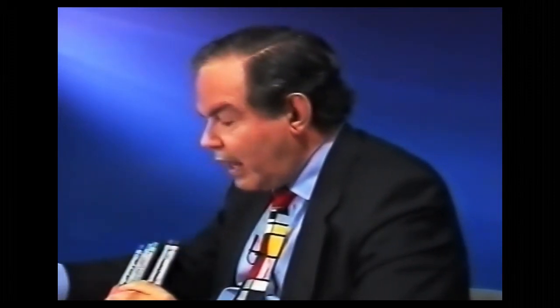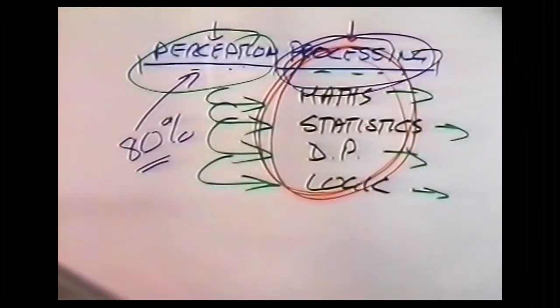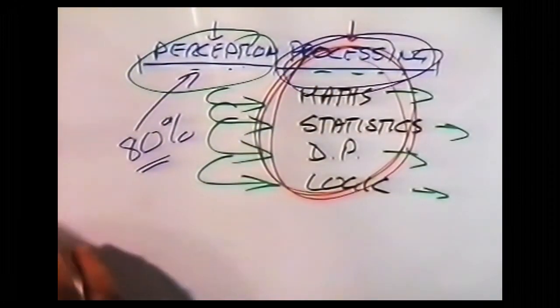80 to 90 percent of the mistakes of thinking were mistakes of perception. But all the emphasis we've put traditionally has been on processing, and we are very good at that. Let me give you one very simple example of the difference between perception and processing.